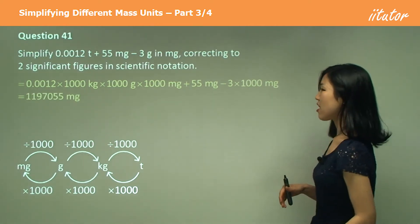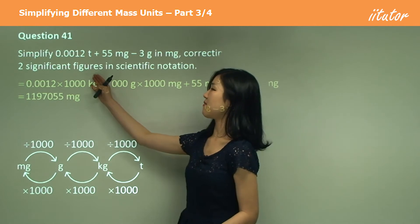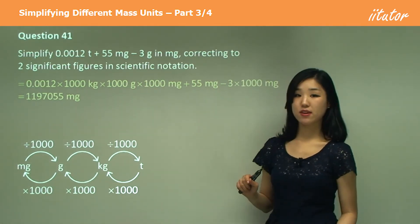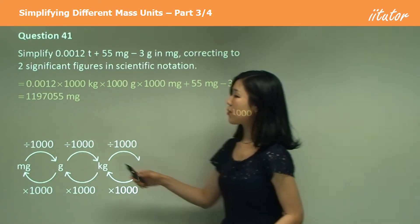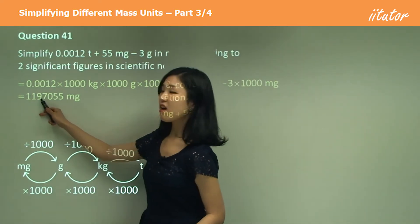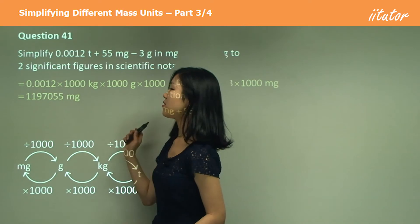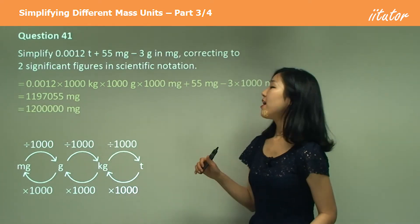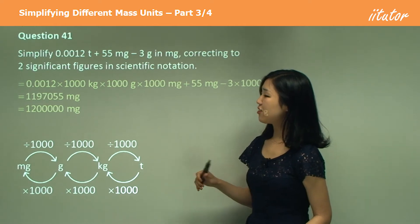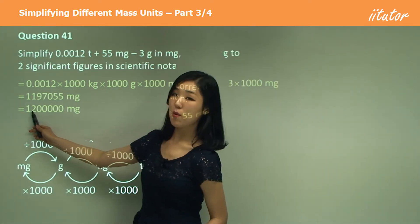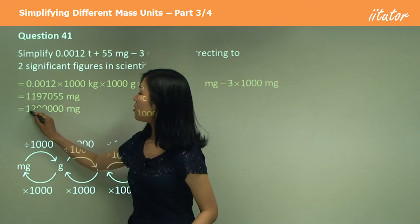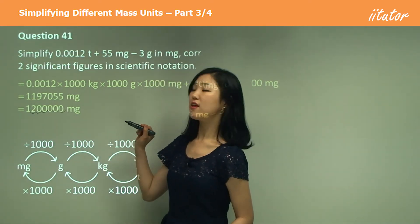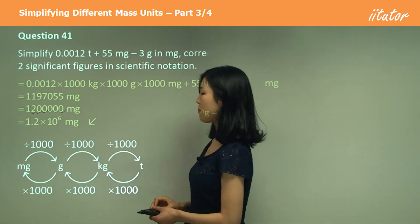And you can see the question asks you to correct it to two significant figures in scientific notation. So can you guys convert to two significant figures first? So we're going to go one, two. Nine is definitely greater than five, so it's going to be one, two and the rest becomes zero. So in scientific notation, make sure you put the decimal between the one and the two, and that means we need to go one, two, three, four, five, six times to the right. So 1.2 times 10 to the power of six. That's what you need to do.